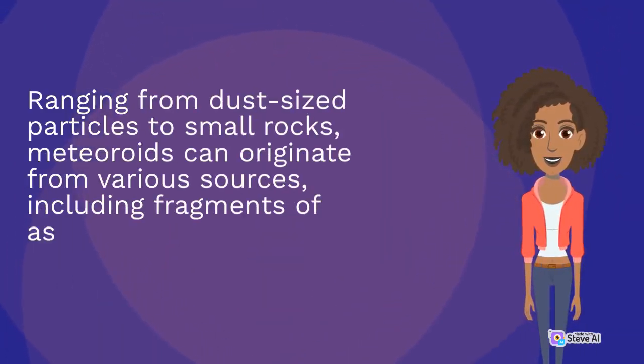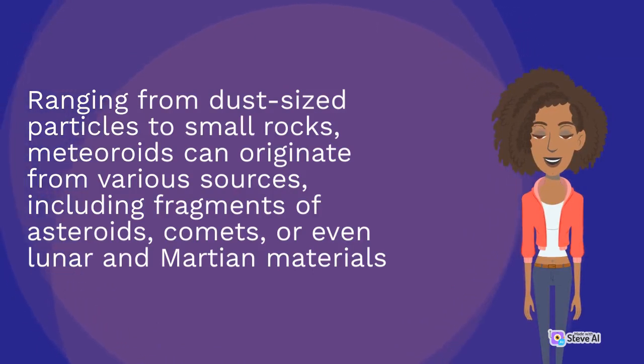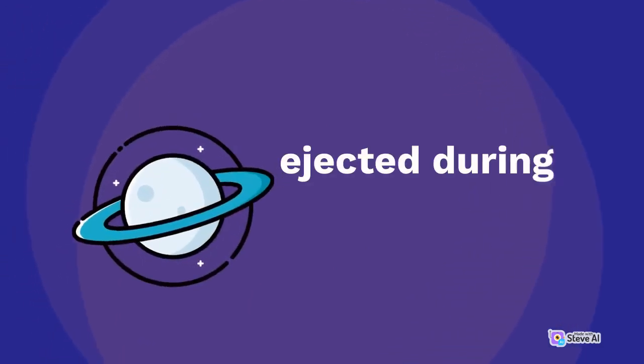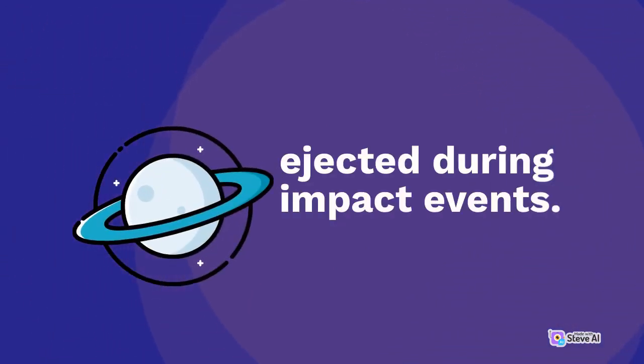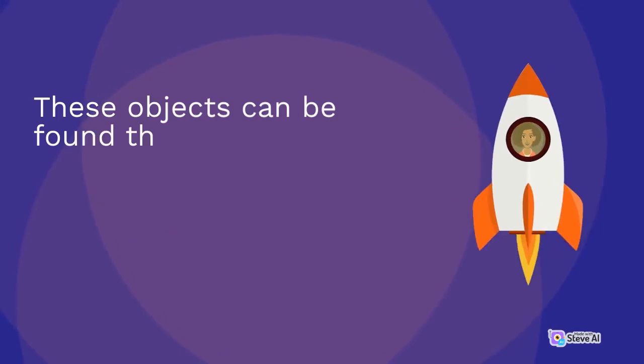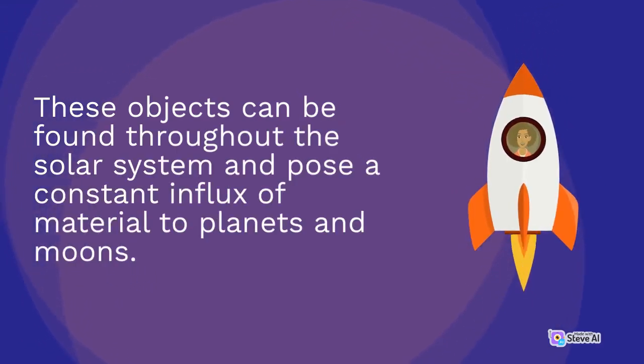Ranging from dust-sized particles to small rocks, meteoroids can originate from various sources, including fragments of asteroids, comets, or even lunar and Martian materials ejected during impact events. These objects can be found throughout the solar system and pose a constant influx of material to planets and moons.